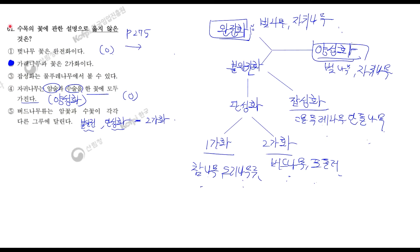책 275페이지 한번 보실래요? 그 부분에 보면 완전화, 불안전화, 양성화, 단성화, 잡성화, 일가화와 이가화를 표로 정리해 놨습니다. 그런데 저는 이렇게 보시는 것보다는 표를 하나 그려서 따라 그려보시는 게 더 추천드려요.